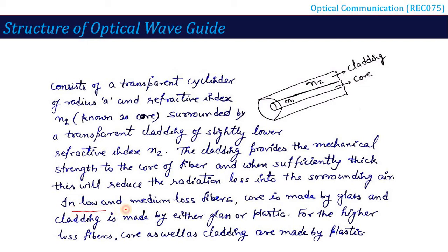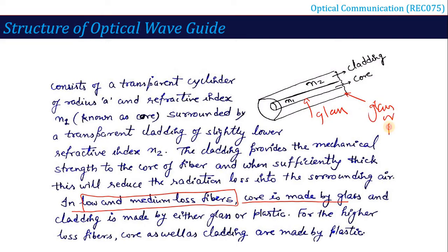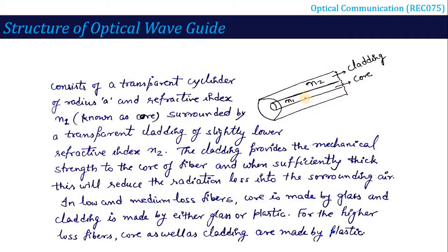In low and medium loss fibre, the core is made of glass and the cladding can be made of glass or plastic. For higher loss fibre — which is cost-effective but not preferred — plastic is used instead of glass for both core and cladding. So the two key components of an optical waveguide we will discuss are the core and the cladding.